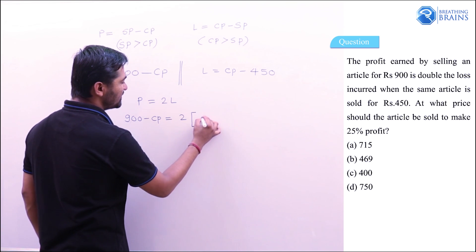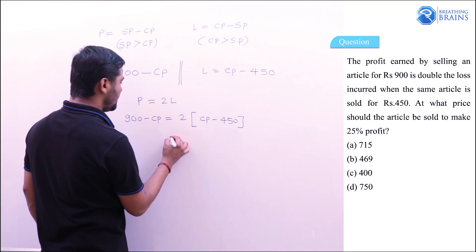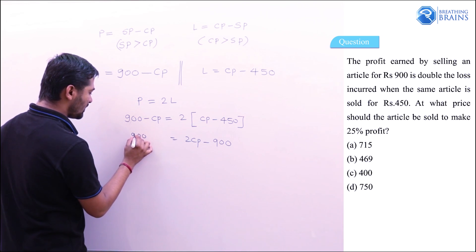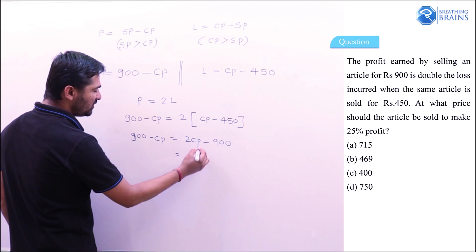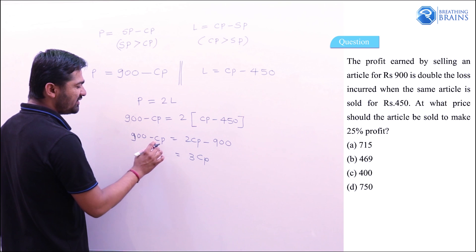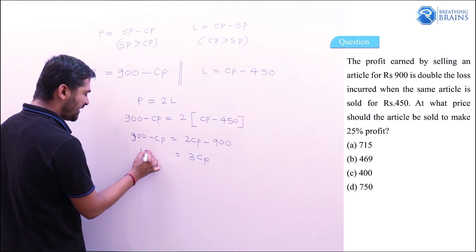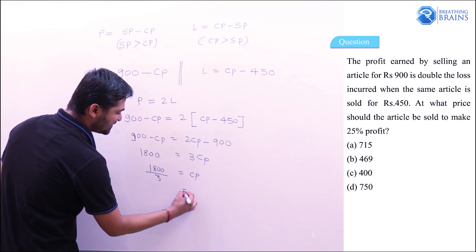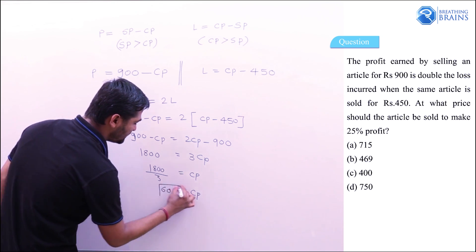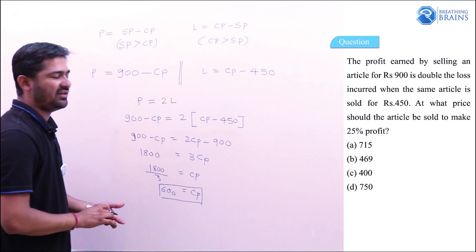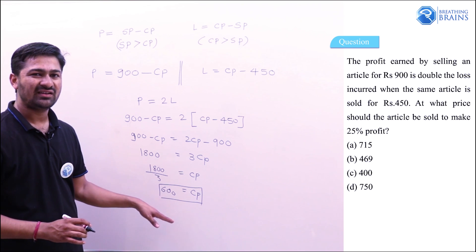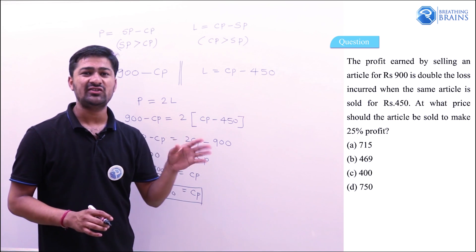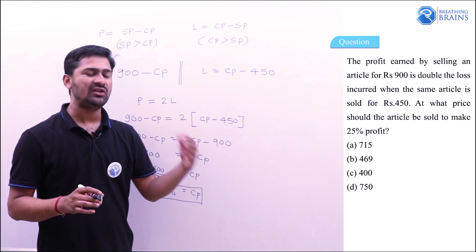Solving: 900 − CP = 2CP − 900. Bringing CP terms together: 900 + 900 = 2CP + CP, so 1800 = 3CP, giving CP = ₹600. Verification: selling at ₹900 gives profit of ₹300; selling at ₹450 gives loss of ₹150. Indeed, profit = 2 × loss.